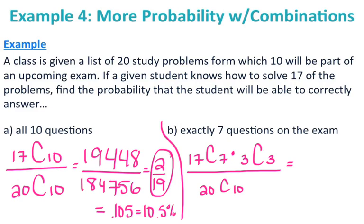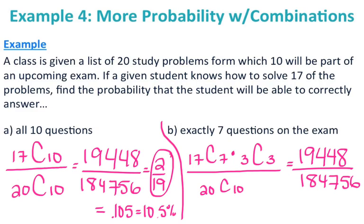So I have 17 choose 7 times 3 choose 3, which is 19,448, over 20 choose 10, which is 184,756. That also simplifies to 2/19, which is about 10.5%. So the probability of answering all 10 questions correctly and the probability of getting exactly 7 correct are both about 10.5% — that's just a coincidence and doesn't happen every time. That is the end of your probability notes.